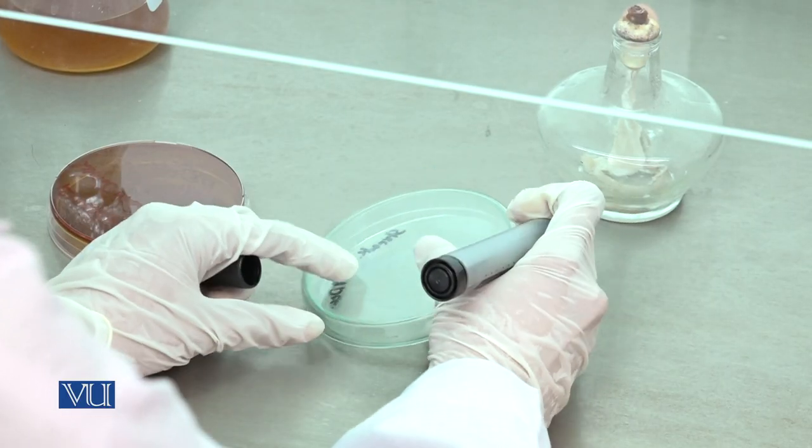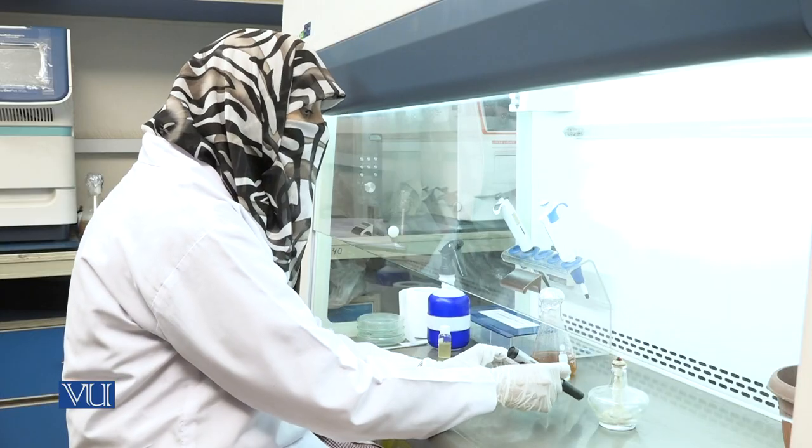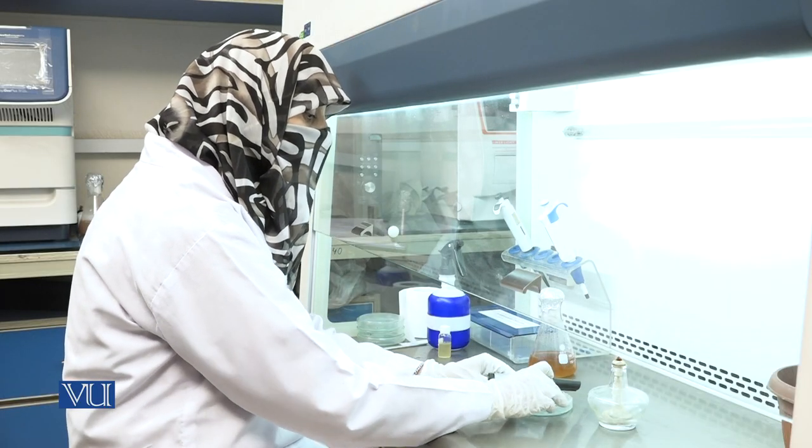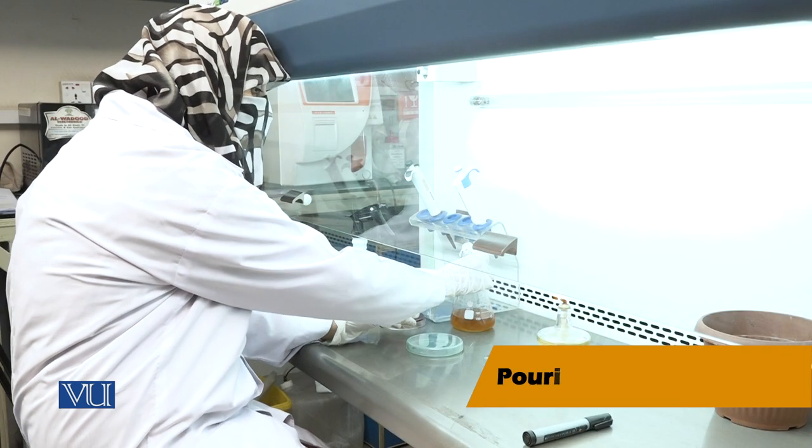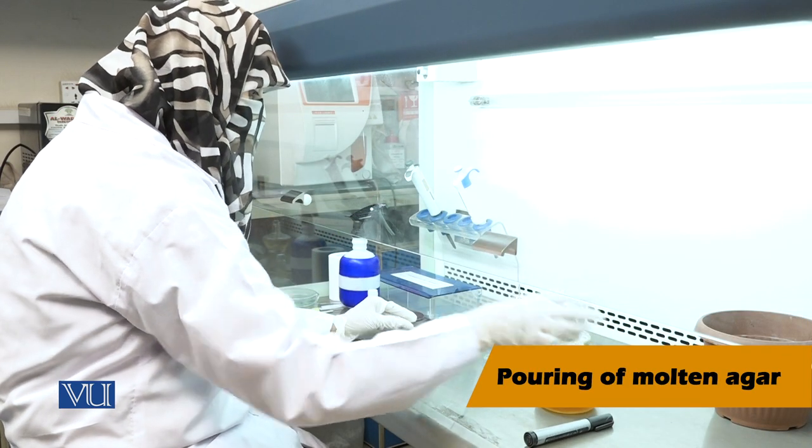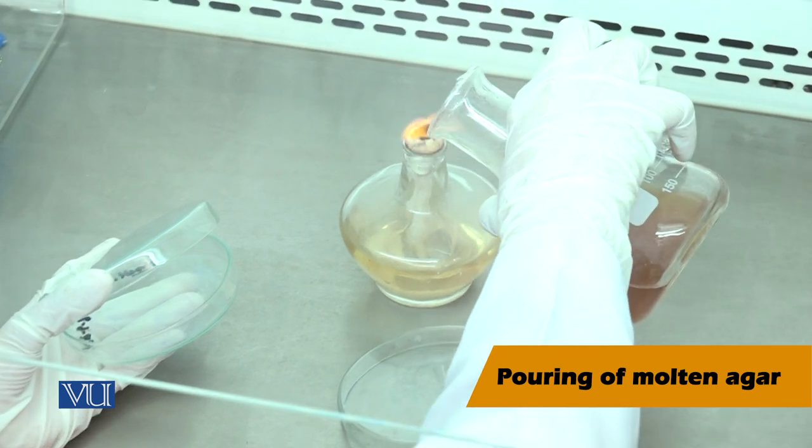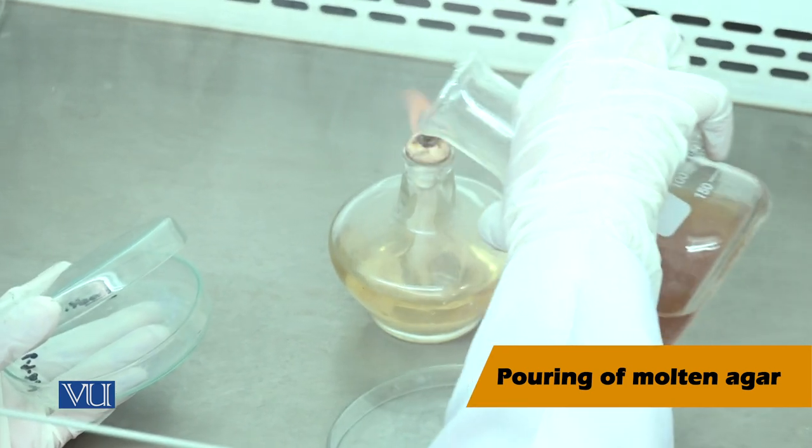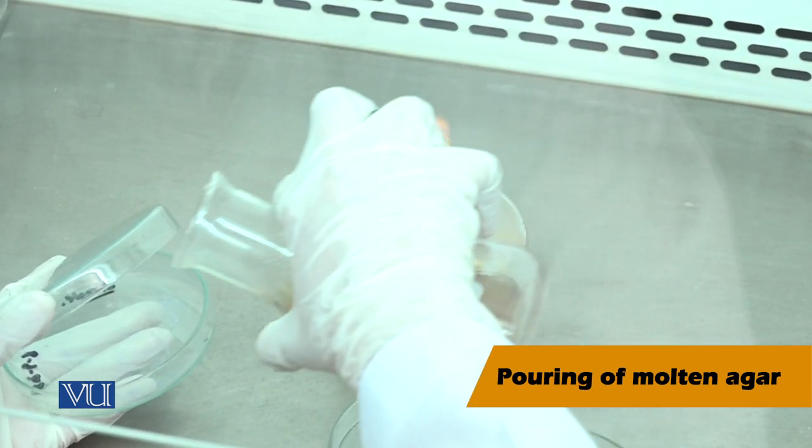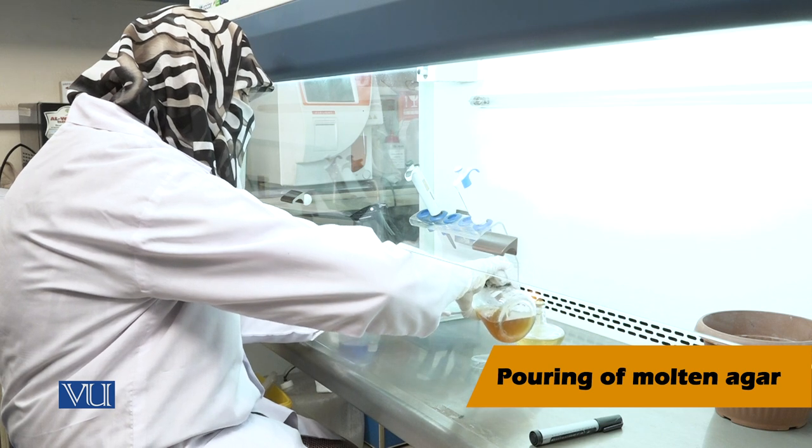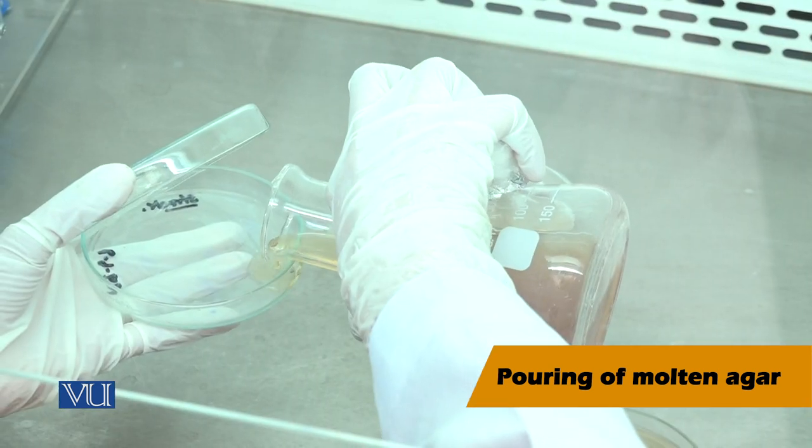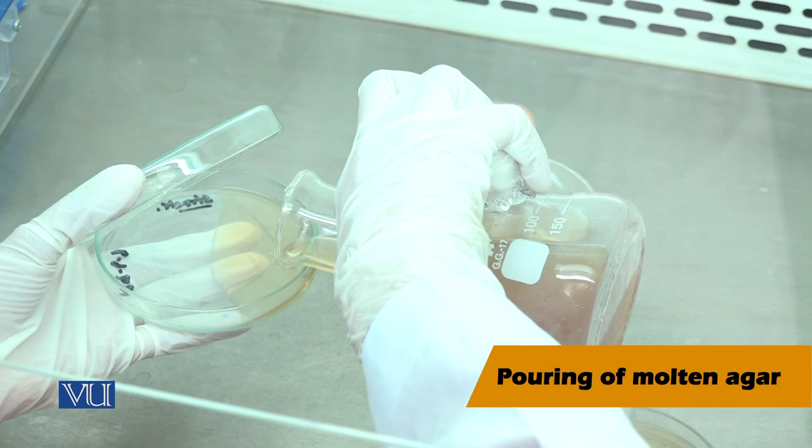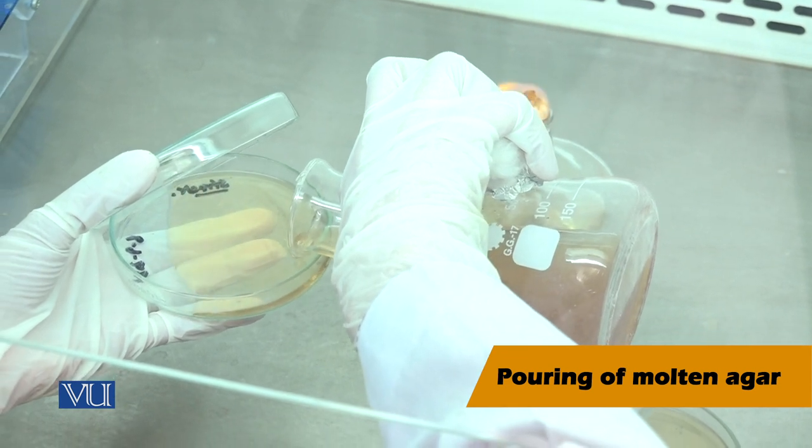Secondly, check agar plate. If any moisture is present, then it is preferable to place them in an incubator overnight. Now, pour the melted agar on sterile petri plate. Sterilize the mouth of flask with the help of spirit lamp and pour the melted agar on sterile petri plate carefully.